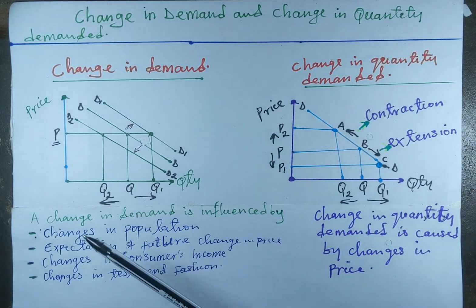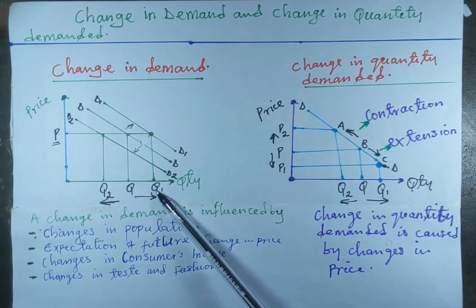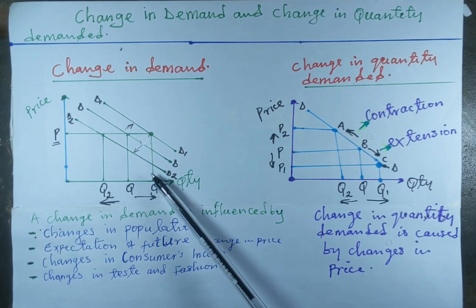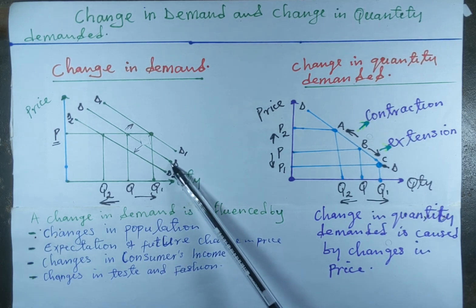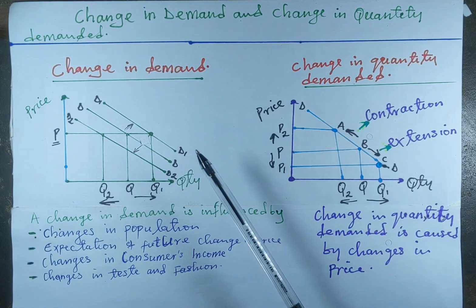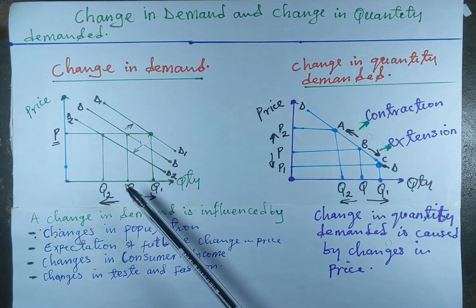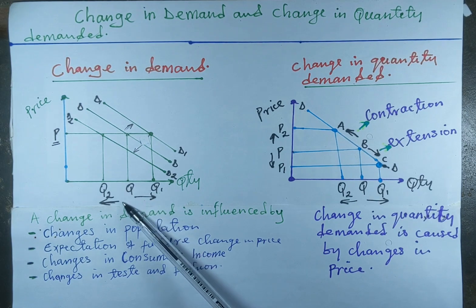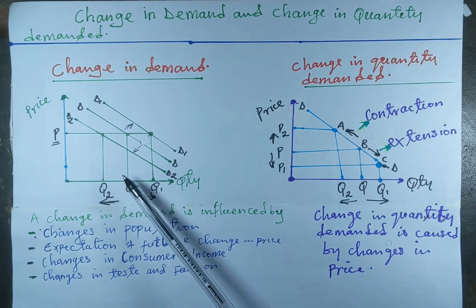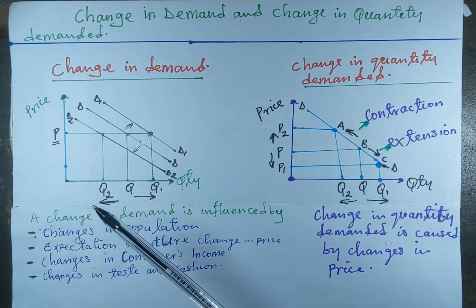Starting with movement to the right: an increase in population will increase the quantity demanded from Q to Q1, causing the demand curve to shift completely from D to D1. A decrease in demand can be caused by a fall in population, which will decrease demand from Q to Q2, causing the demand curve to shift completely from D to D2.